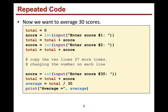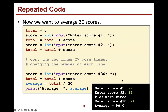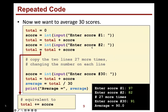Inside that body we have the repeating code. This is way too many lines — I can't even fit them all; I just say 'copy the two lines 27 more times, changing the number.' Also note that 'total = total + score' and 'total += score' are equivalent shortcuts — you're welcome to use either notation.